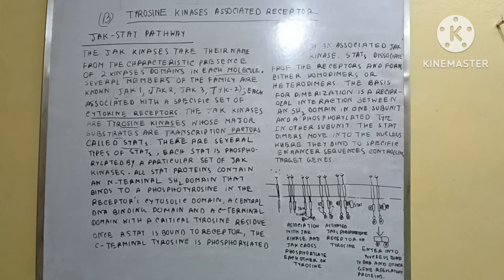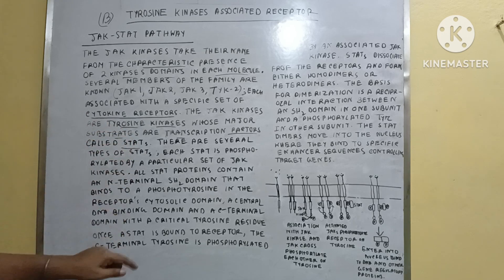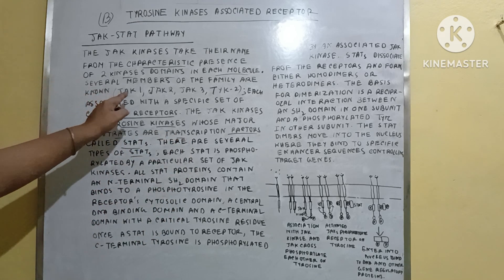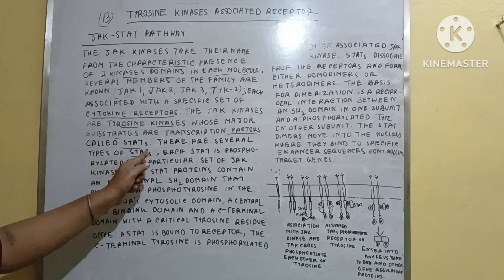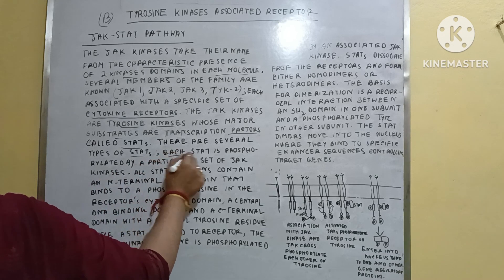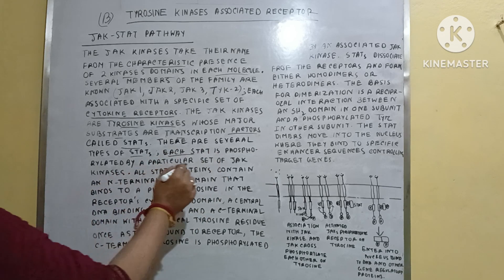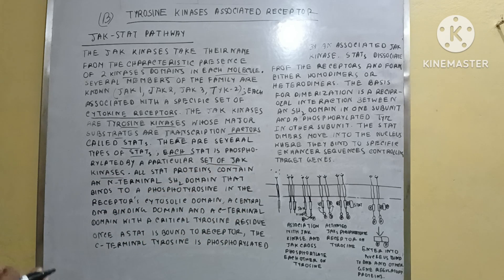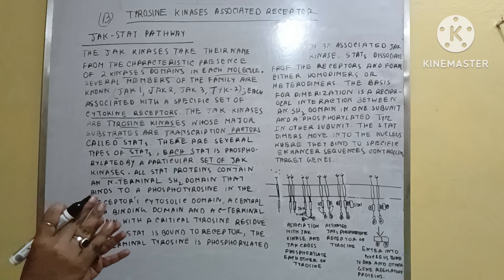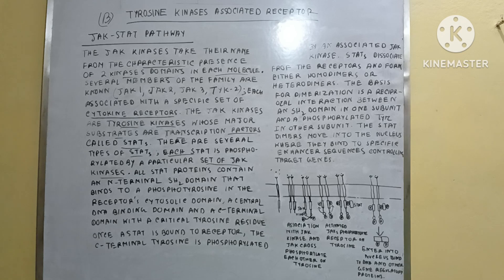There are several types of JAK kinases, and likewise several types of STATs as well. Each STAT is phosphorylated by a particular set of JAK kinases — not all JAK kinases control all STATs. Each individual STAT is controlled by individual JAKs.